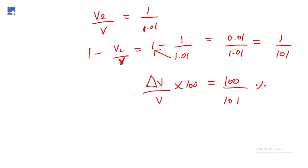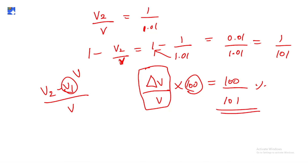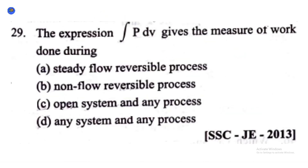Alternatively, you can compute ΔV = V₂ − V₁, factor out V, cancel, and multiply by 100 to get the same answer of 100/101 percent.